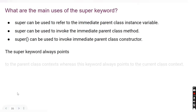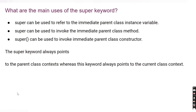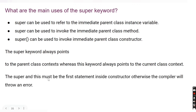Another important point: the super keyword always points to the parent class context, whereas the this keyword always points to the current class context. I have covered the theory and practical implementation of the this keyword in another video — the link will be in the description. Both super and this must be the first statement inside a constructor; otherwise the compiler will throw an error.